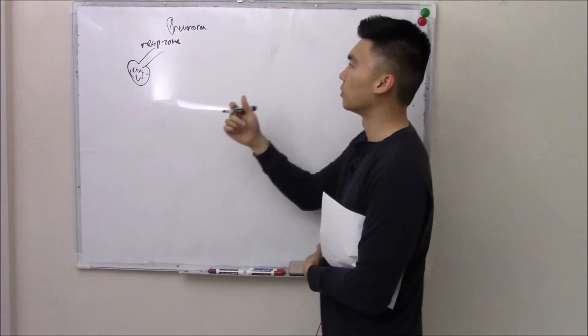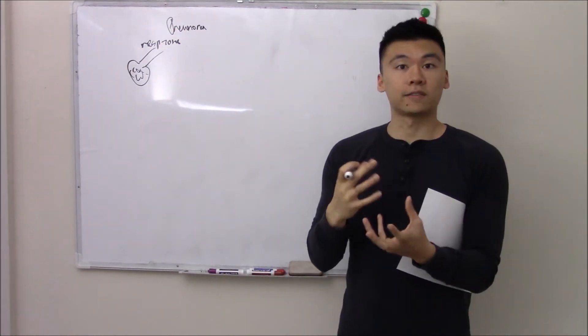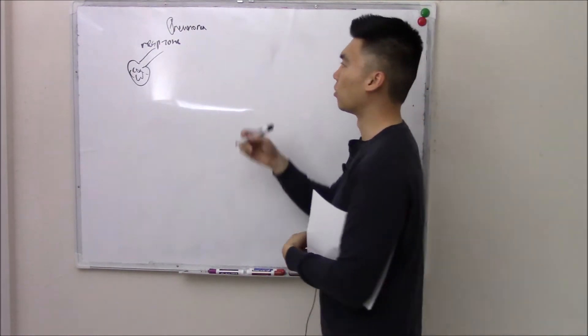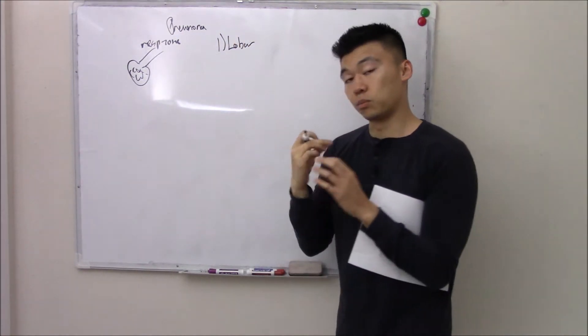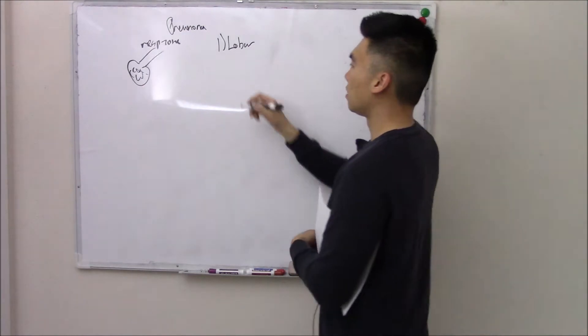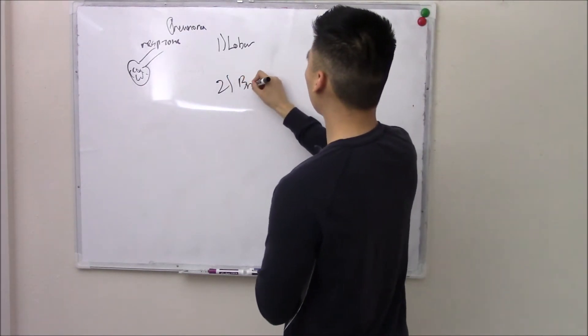And you can break it up into different types of pneumonia. If it affects a lobe of your lung, we call that lobar pneumonia. If it only affects the bronchi and the bronchioles, we call that bronchopneumonia.